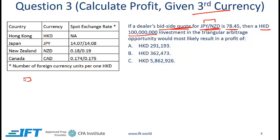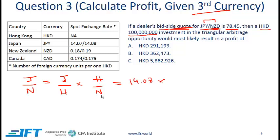We need the Japanese yen to New Zealand dollar offer rate, which equals Japanese yen to Hong Kong dollar offer times Hong Kong dollar over New Zealand dollar offer. Japanese yen to Hong Kong dollar offer is 14.08, multiplied by Hong Kong to New Zealand offer, which is 1 divided by 0.18 — the offer is the inverse of the bid. This gives us 78.22.